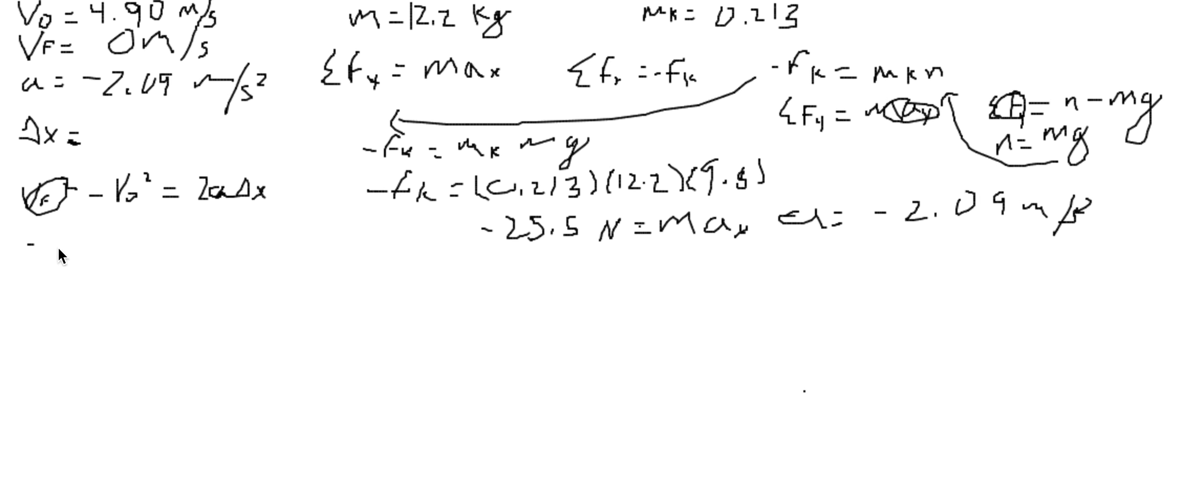Plug in our values. And we get 4.9 squared divided by 2 divided by negative 2.09 for acceleration gives us delta x.